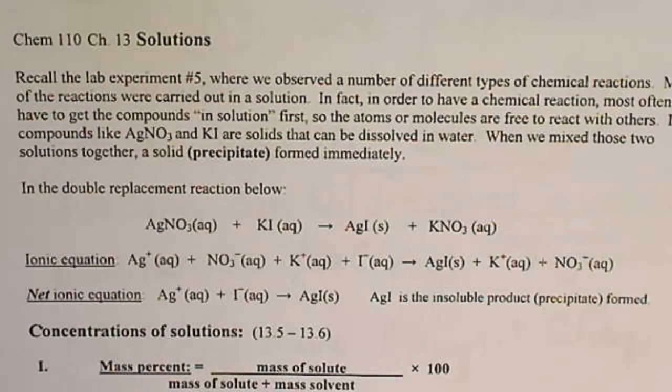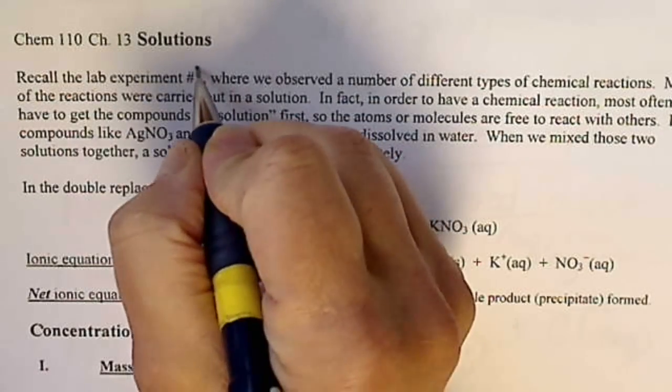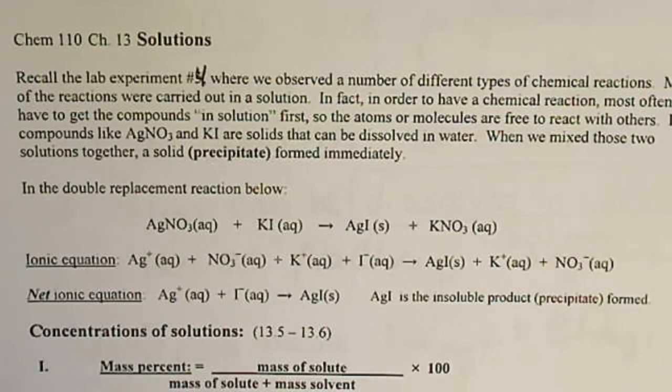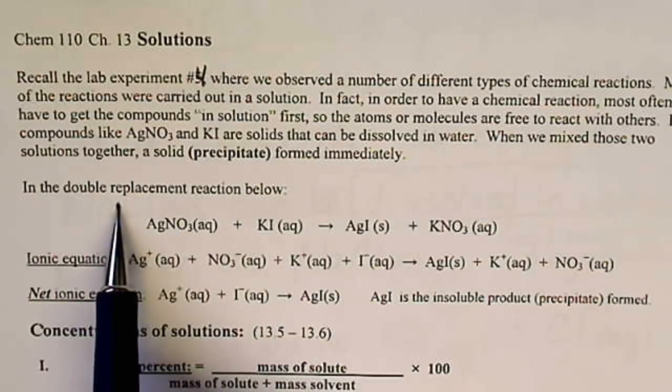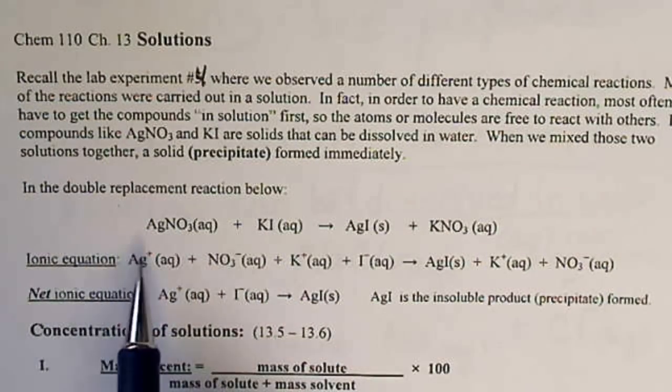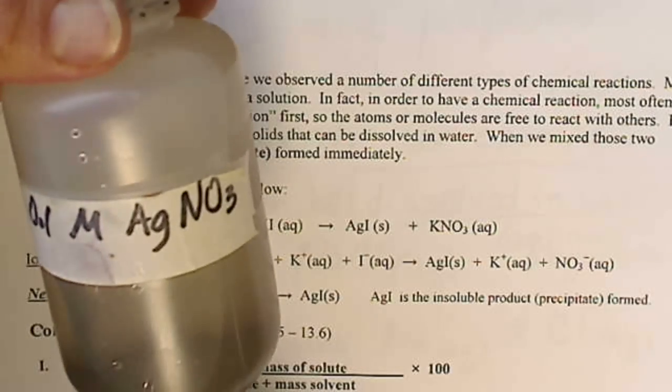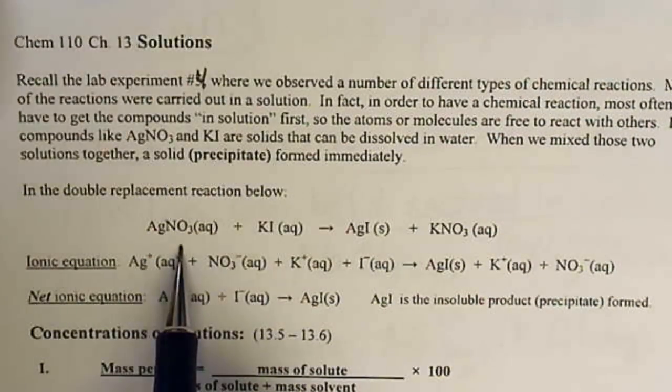You may recall in experiment number four, I believe it was, when we mixed a bunch of solutions together, we did a lot of reaction types, and one of the reaction types that we did was the double replacement reaction. We took silver nitrate, which is dissolved in water, and we mixed it with KI, which is also dissolved in water.